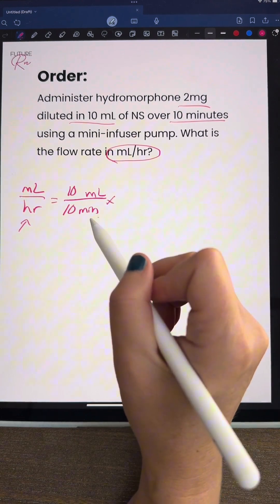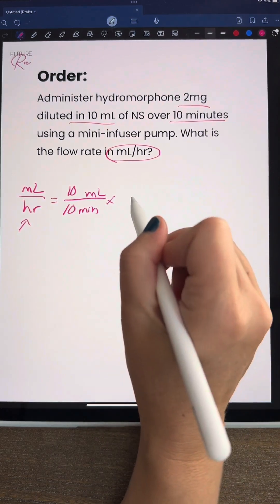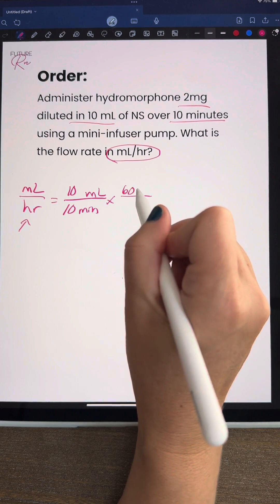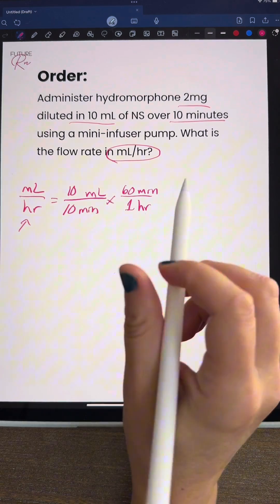Now the next thing we want to get rid of is actually minutes because we want milliliters per hour. We're going to use our time conversion to get rid of minutes and here you can see we have milliliters per hour.